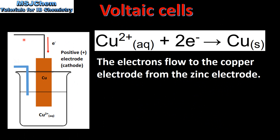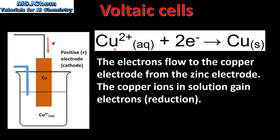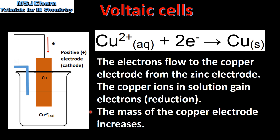The electrons flow to the Copper electrode from the Zinc electrode. The Copper ions in solution gain electrons to form Copper atoms, which is reduction. Because the Copper ions are being reduced to form Copper atoms, the mass of the Copper electrode increases.